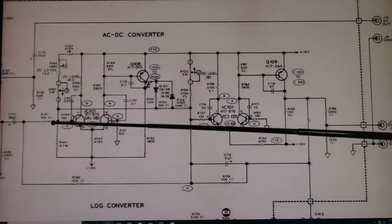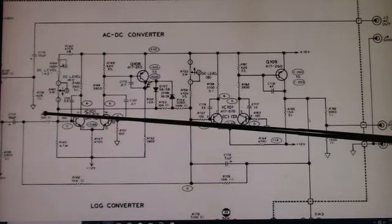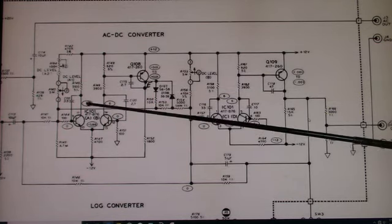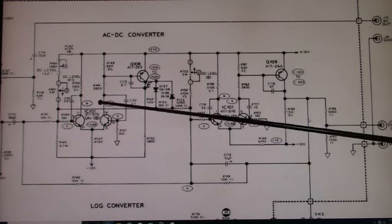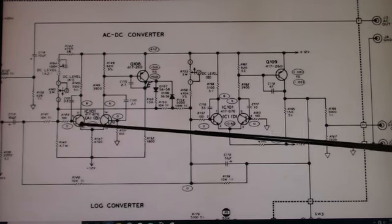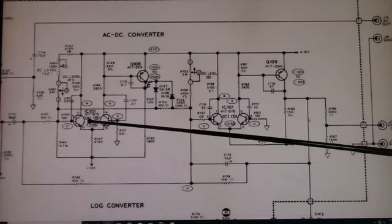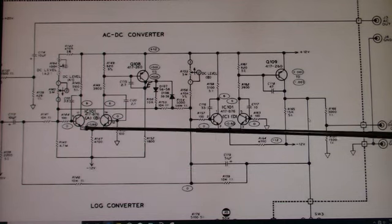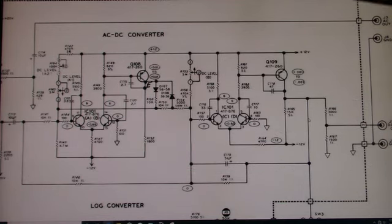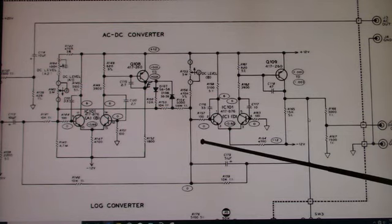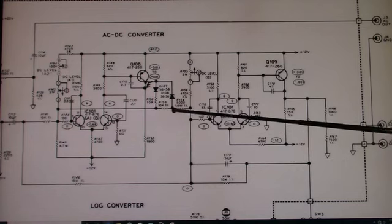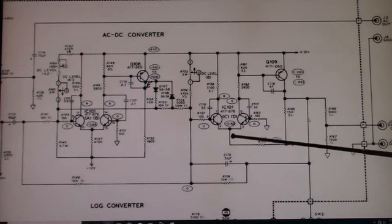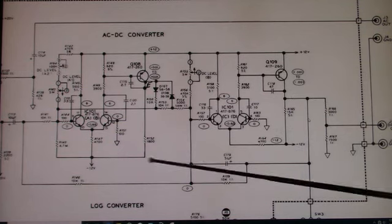The output from the main amplifier is connected into the AC to DC converter. It's applied to sections A and B of IC101, part of a CA3046 with five transistors on a substrate in a DIP package. They form a differential amplifier that drives Q108. The whole purpose of this section is to convert AC to DC. You can't use a full wave bridge rectifier because of the drop across the diode, so this forms a precision rectifier.